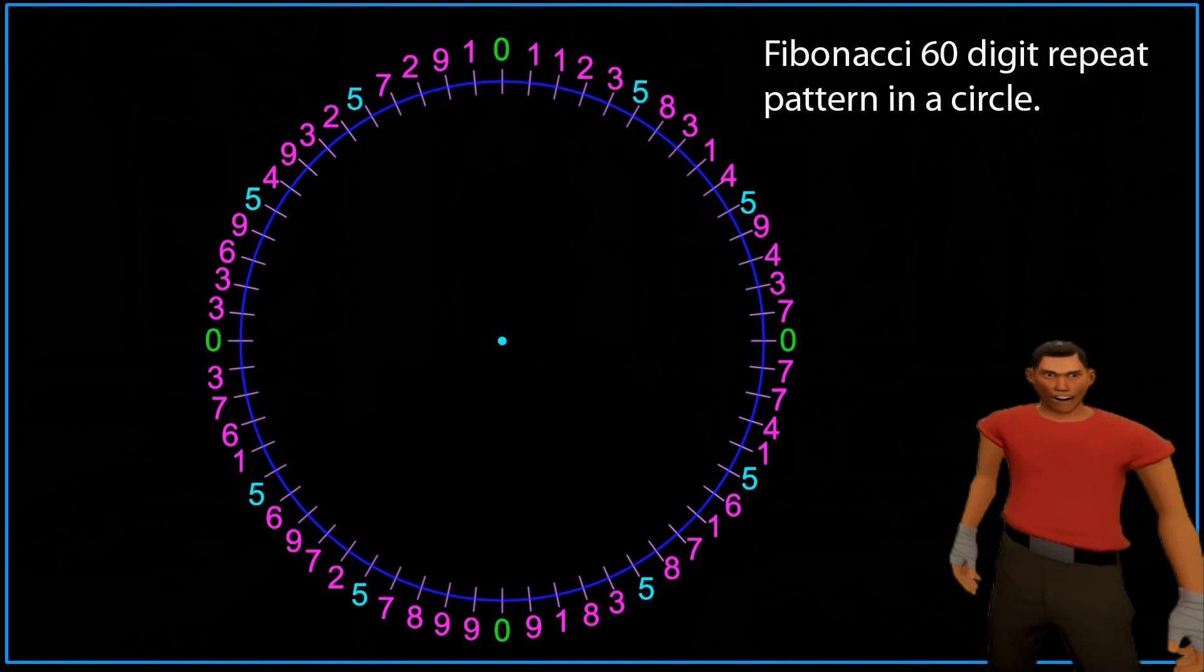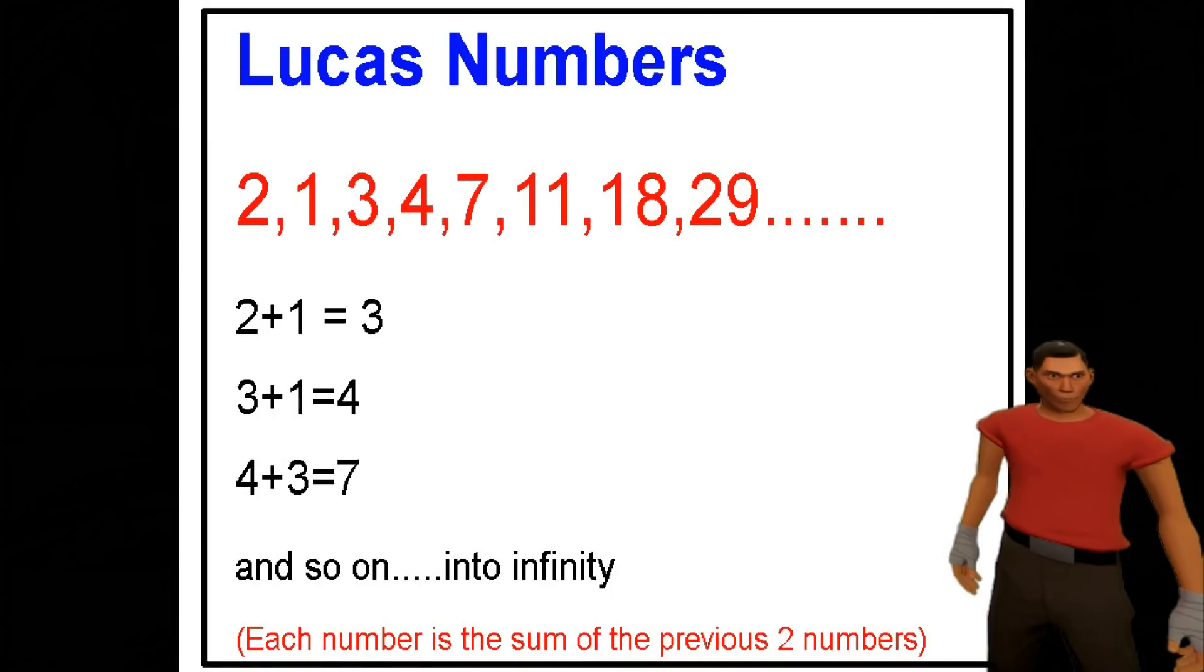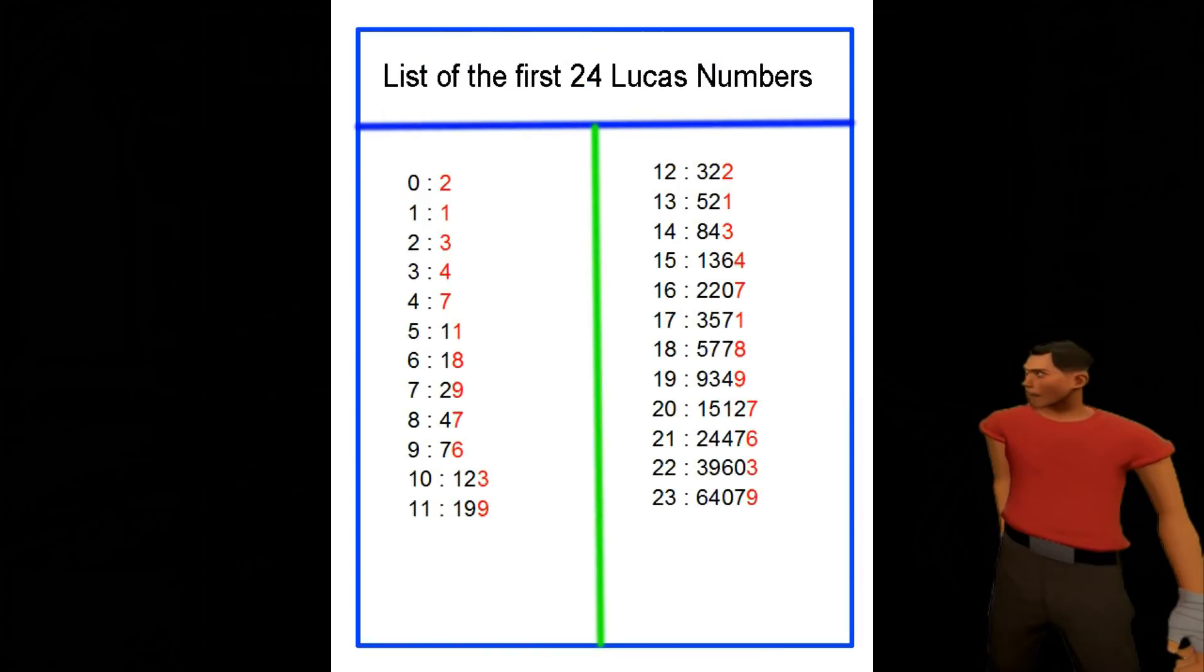Not only does this 60 digit cipher encode for all Fibonacci numbers, but it also encodes all Lucas numbers. If you study the Lucas series, you will find that the last digit in each number from the Lucas series forms a pattern of 12 numbers that, like the Fibonacci series, also repeat into infinity.